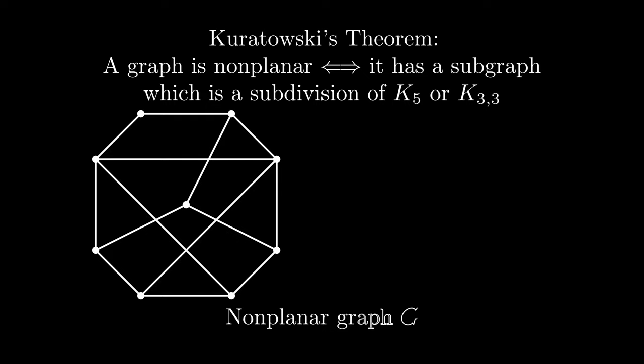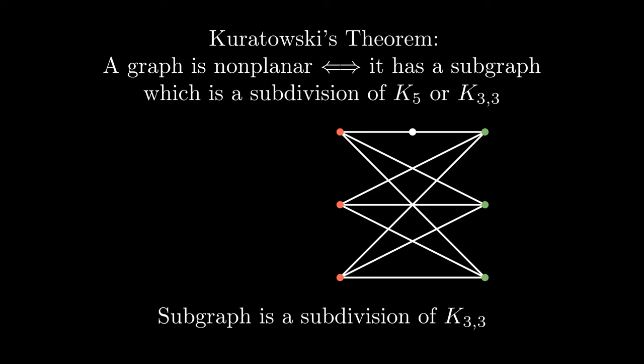Take for example this non-planar graph G. We have identified in red and green the six vertices that correspond to the vertices of K3,3, so we can take that subgraph of G and see that it is a subdivision of K3,3.